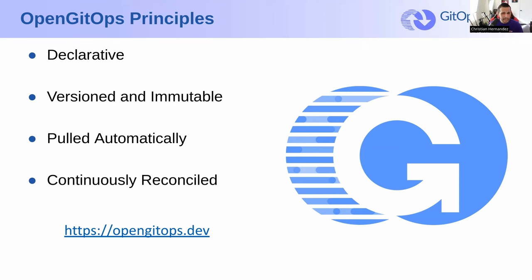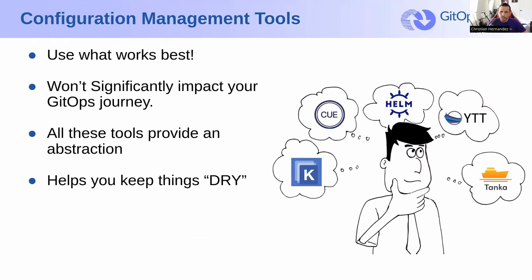I'm actually here to challenge one of them a little bit, but it's all in good fun. Before I do that, I want to talk about and hone in on config management tools in GitOps. Config management tools are great and in general they seemingly play a big role in your GitOps journey. What's great about it is that there are so many tools out there, and you can use whatever works for you and your organization. Config management tools actually won't significantly impact your ability to implement GitOps, because they all attack the same issue — abstracting the configuration for you and how it gets applied to a Kubernetes cluster.